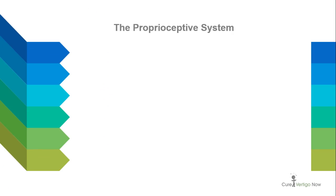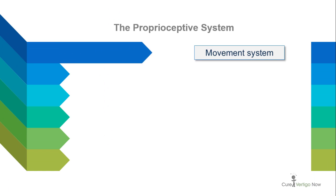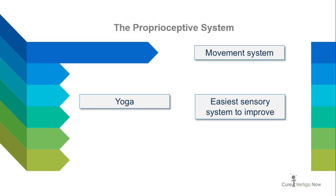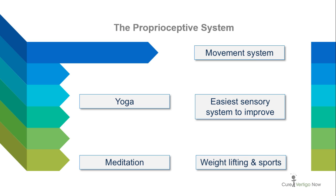The proprioceptive system is also known as our movement system and is usually the easiest sensory system to work with and improve. Simple methods that are used to improve the proprioceptive system include yoga, meditation, weightlifting and playing sports.